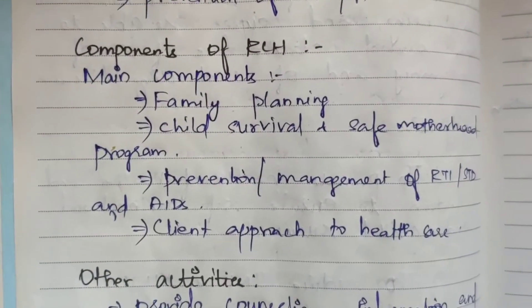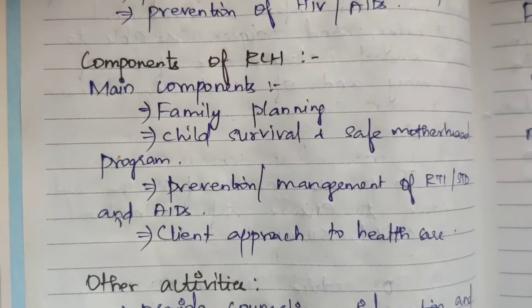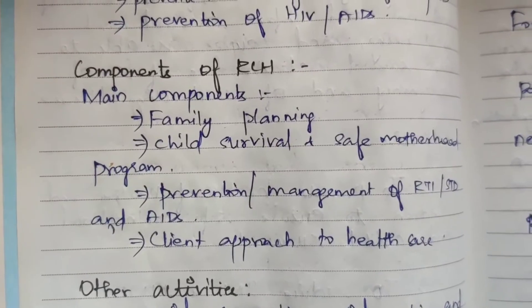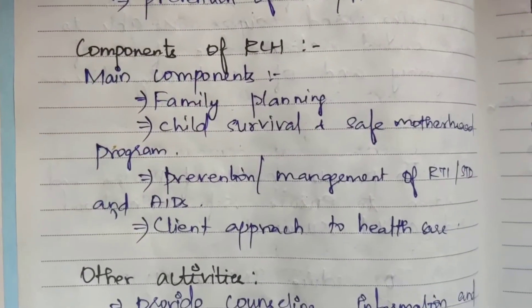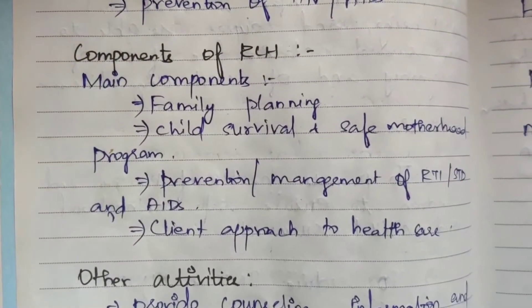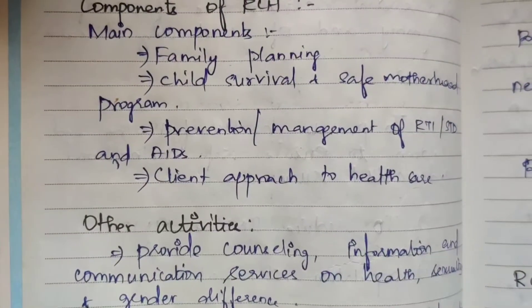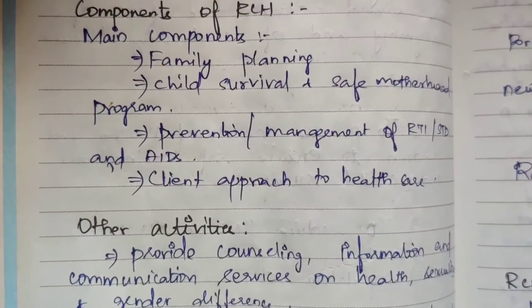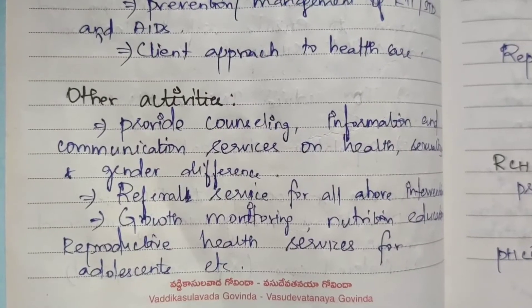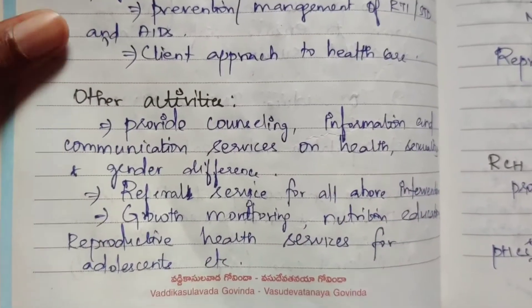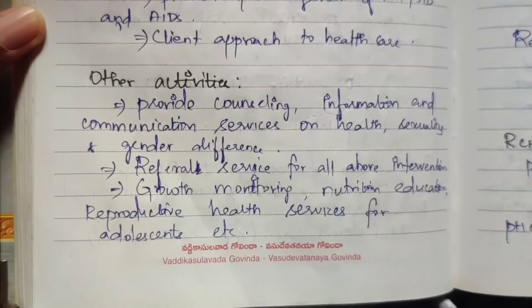The four main components of the RCH program are: first, family planning to avoid unwanted pregnancy; second, child survival and safe motherhood program; third, prevention and management of reproductive tract infections, STDs, and AIDS; fourth, client approach to health care. Other activities include providing counseling, information and communication services on health, sexuality, and gender differences.